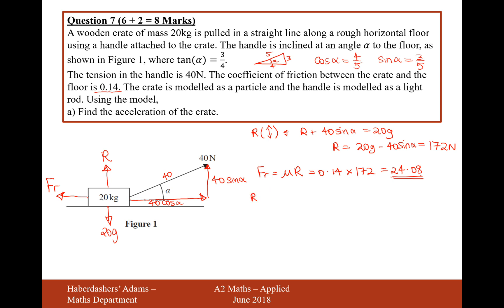So that's the force of friction acting to the left. Now what we're going to start to do is resolve our forces taking the right hand direction as positive. It's going to be 40 cos α, that's this force here going to the right. Subtract this frictional force, so that would be 24.08. And this will equal, this is force equals mass times acceleration, so the mass here is 20 times acceleration.